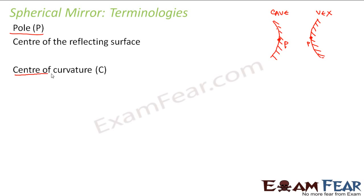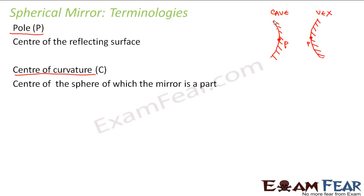Next we have center of curvature. The center of curvature is the center of the sphere of which the mirror is a part. As mentioned earlier, a concave or convex mirror is just a portion cut from a sphere. That sphere has a center, and that center of the sphere from which the mirror has been obtained is known as the center of curvature. For a concave mirror, the center of curvature lies at a point along the axis of the mirror, and similarly for a convex mirror. Center of curvature is denoted by capital C.